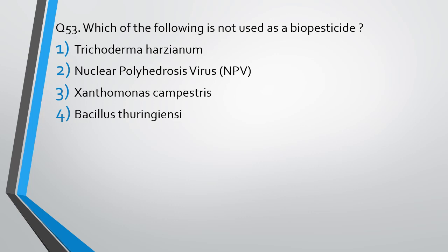Question number 53: Which of the following is not a biopesticide? Trichoderma harzianum, nuclear polyhedrosis virus, Xanthomonas campestris, or Bacillus thuringiensis? The correct answer is Option C — Xanthomonas campestris is not a biopesticide.